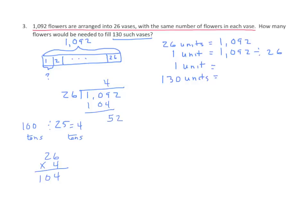Looking at my estimation, I'll use 25 again, so I would have 50. Since I have 52, I decompose that to 1s — so 50 ones divided by 25 equals 2 ones. I can mentally tell that 26 times 2 is 52. Record 2 in the ones place in my quotient, and I get 0 remainder. So now I have 1 unit equals 42.